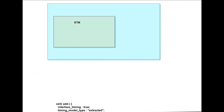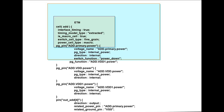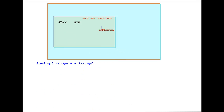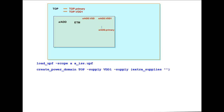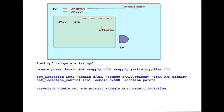ETM captures the timing information for a block in Liberty syntax. It also has PG pin definitions, the related power and ground pin for all the signal pins, and you can also define the internal power switch using the fine grain power switch definition. We load the block level UPF file using load_upf -scope and then define the top level UPF constructs and the associations.